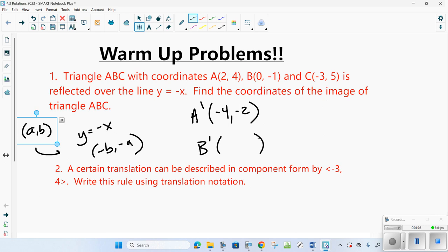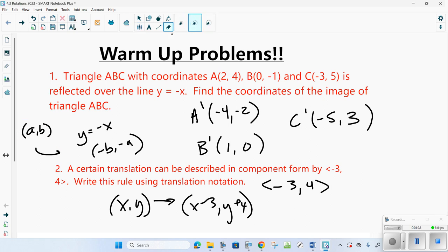B prime, again, flip them, change the sign. And C prime would be negative 5, positive 3. Next, a certain translation can be described by the component form negative 3, 4. Write the rule. So the rule for x, y being translated negative 3, you're going to subtract 3 from the x, and you're going to add 4 to the y. And there we go.